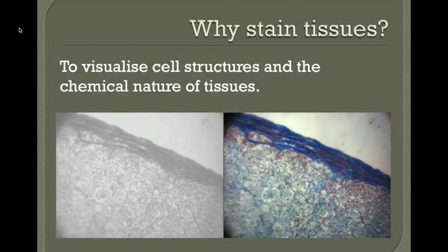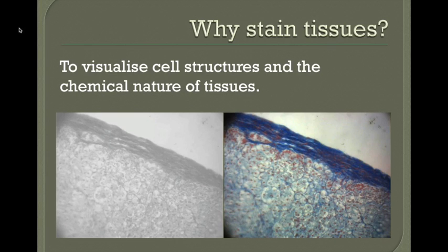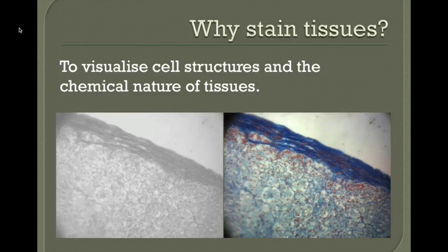Why do we bother staining tissues at all? Biopsies and specimens go to the histolab, where they get wax-embedded, preserved, and sectioned. What comes to us to stain is a glass slide with a piece of tissue on it. If we just looked at it unstained under the microscope, we might see some structure but not in great detail.